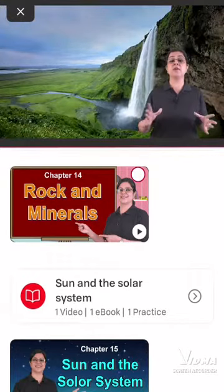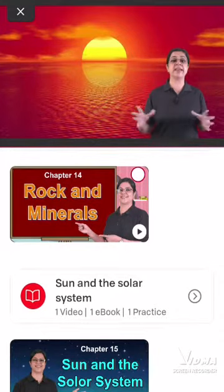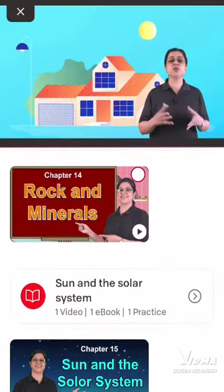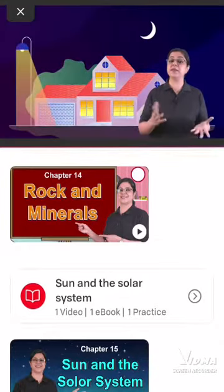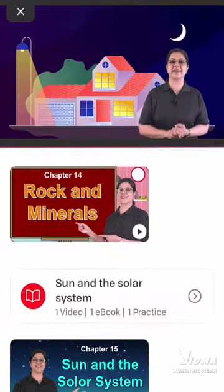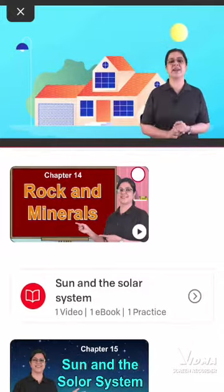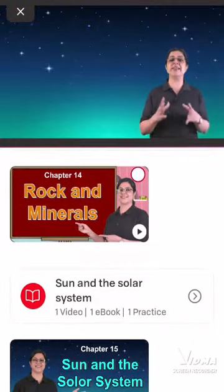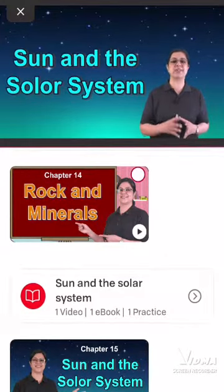But what about the sun? We are seeing the sun from Earth during the day — where does it go at night? There are many stars in the night sky, and these stars and the sun are where they are. This is what we are going to learn in this chapter: the Sun and the Solar System.